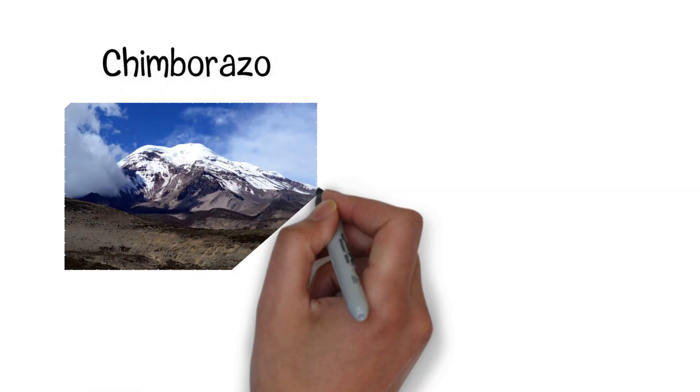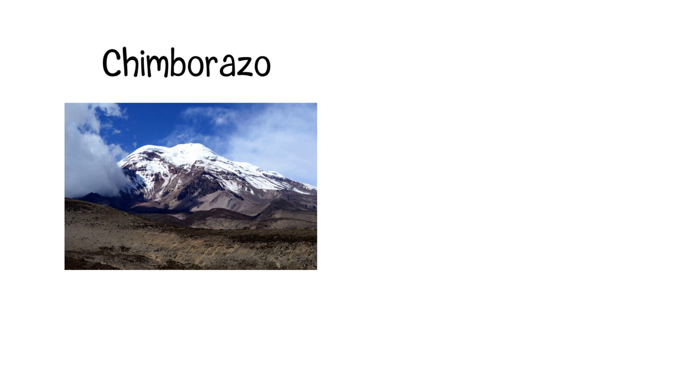Chimborazo is a volcano located in Ecuador. The reason that Chimborazo can be ranked in the top three is because it is the farthest from the center of the Earth.